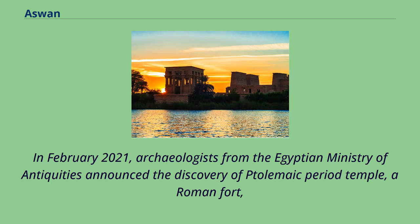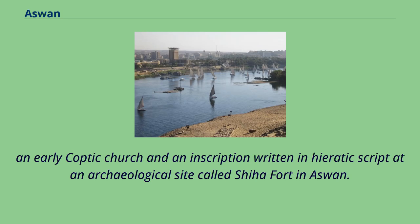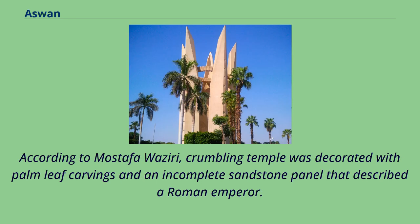In February 2021, archaeologists from the Egyptian Ministry of Antiquities announced the discovery of a Ptolemaic period temple, a Roman fort, an early Coptic church, and an inscription written in hieratic script at an archaeological site called Shia Fort in Aswan. According to Mostafa Waziri, the crumbling temple was decorated with palm leaf carvings and an incomplete sandstone panel that described a Roman emperor.